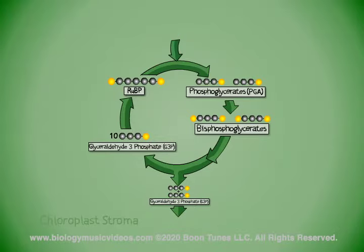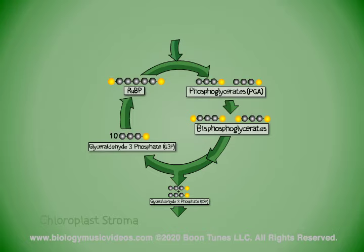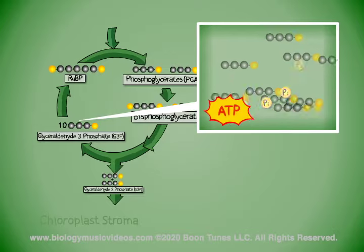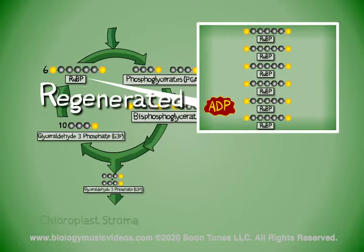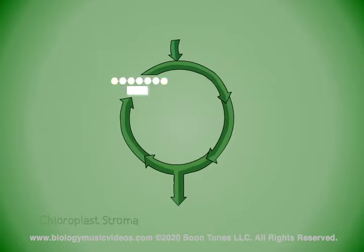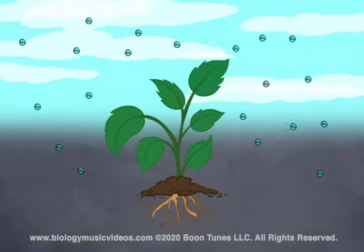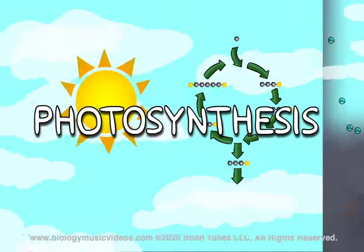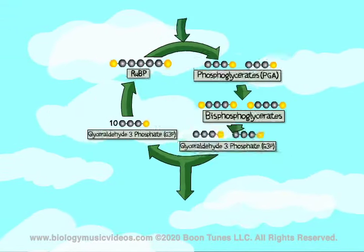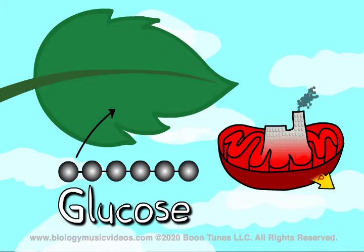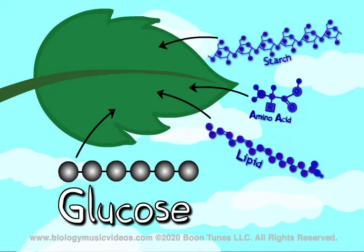Now let's take a look at phase 3: the regeneration of RUBP. The 10 molecules of G3P are recycled enzymatically — they're rearranged and phosphorylated, and RUBP is regenerated. We're back to where we started from and the cycle's ready for another run. More G3P will be synthesized when the plant takes in carbon dioxide. So photosynthesis parts 1 and 2 help make G3P, and when they do, plants can make glucose — their major fuel — and other organic molecules.